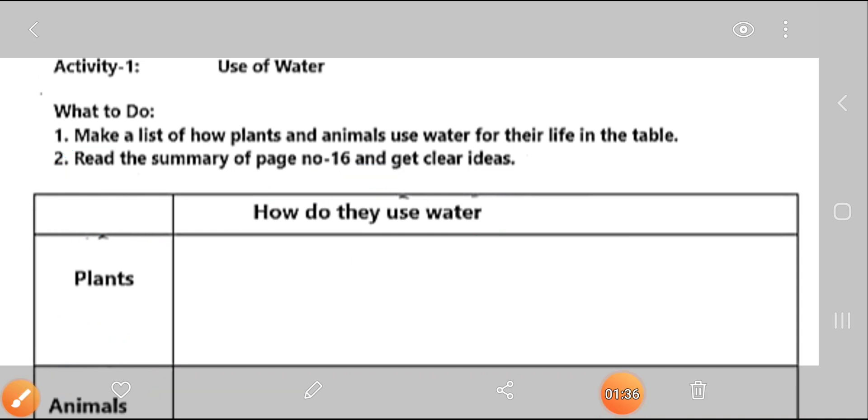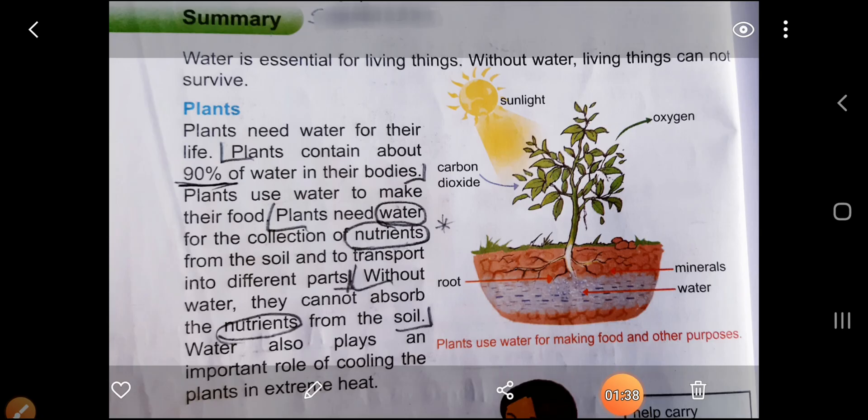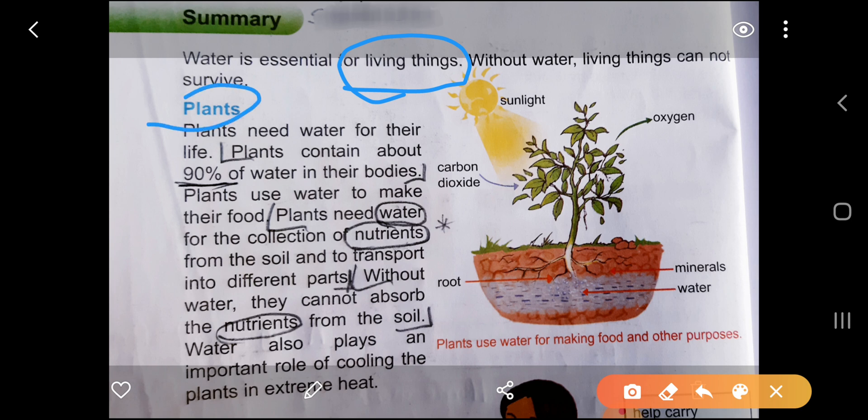This is a summary. Water is essential for living things, that is plants and animals. Without water, living things cannot survive. Plants, for example, plants need water for their life and plants contain how much water, 90 percent of water in their bodies, and plants use to make their food.